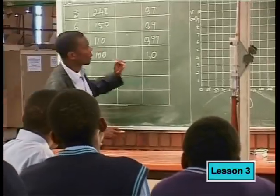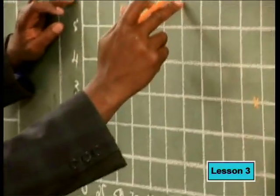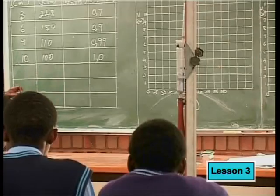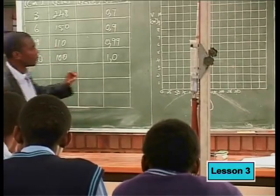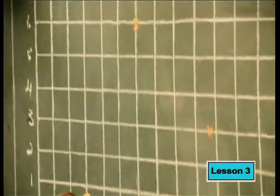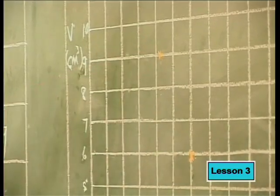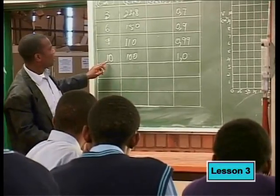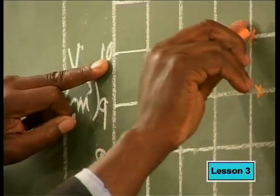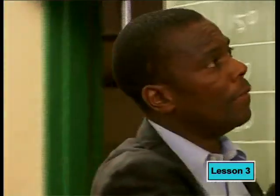The next reading: volume six and the pressure is 150. Then we have volume nine and pressure 110 — nine cubic centimeters and 110. And the last reading would be volume 10 and pressure 100. Now we have our four readings and we can try to join these points.